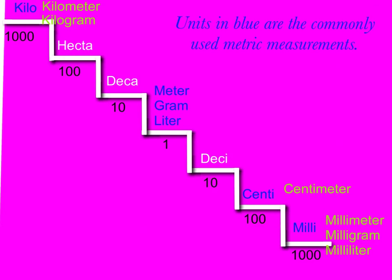You can convert a meter to a centimeter by multiplying by a hundred. You do this because centi means one-hundredth. You can convert a meter, a gram, or a liter to a millimeter, a milligram, or a milliliter by multiplying by a thousand. This is because milli means thousandth.